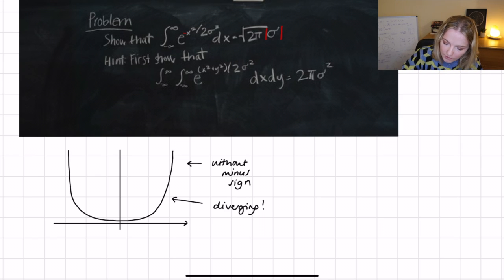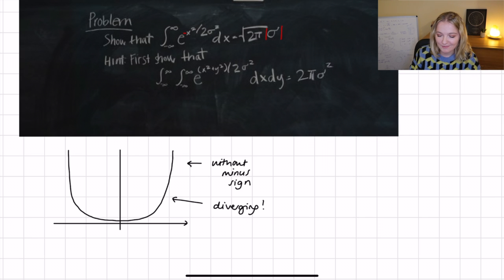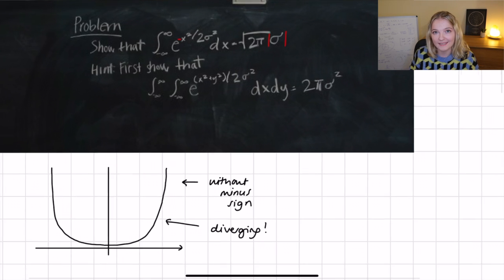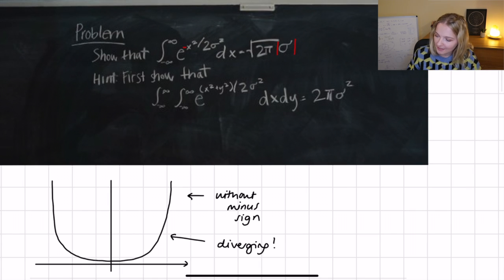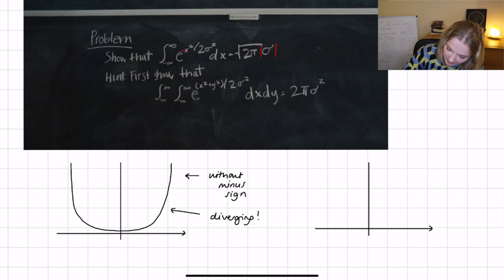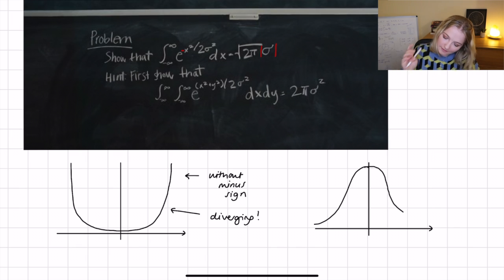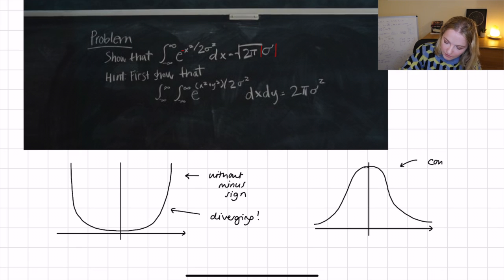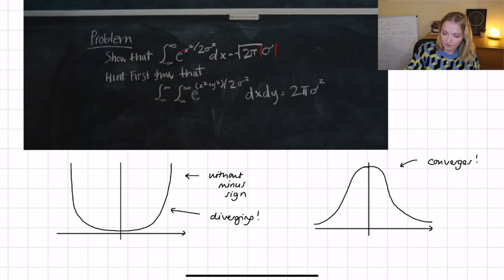That's the reason for the negative sign — because when you add the negative sign, any mathematicians watching might actually recognize the problem as a normal distribution. So when you add the negative sign, now the integral converges. We have a normal distribution, and Mary is right in saying that this converges.